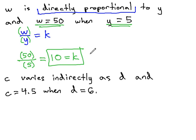That means, as w and y change in this situation described, that constant k will always be 10. W will always be 10 times y.